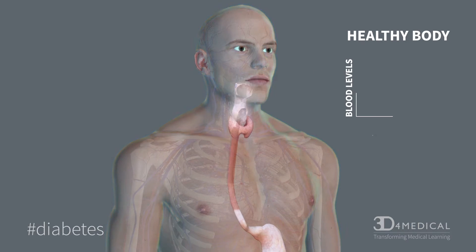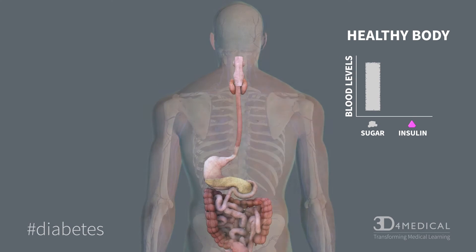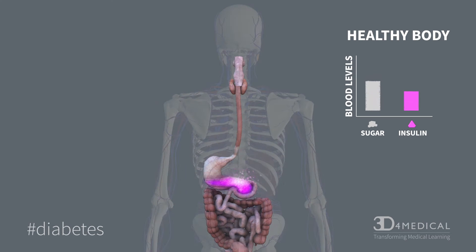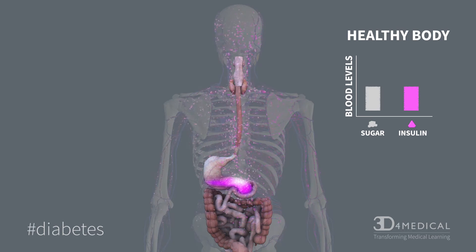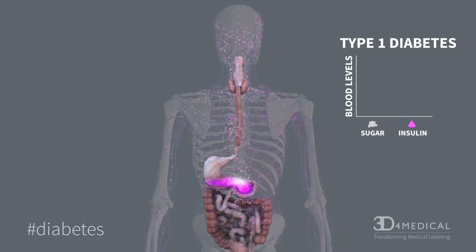Normally, after eating a high sugary food or drink, the pancreas releases a surge of insulin into the bloodstream. Insulin travels to the cells in the body to tell them to absorb sugar and reduce it from the bloodstream.